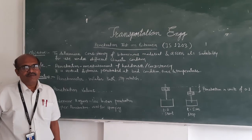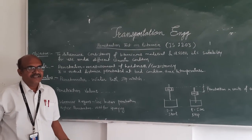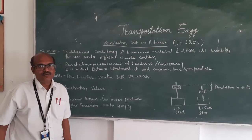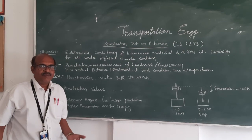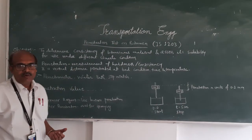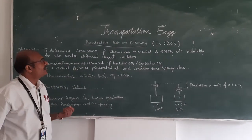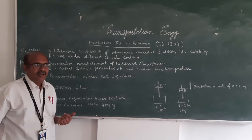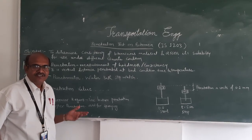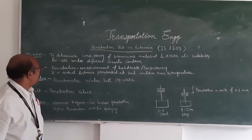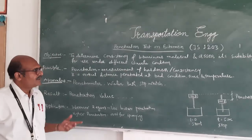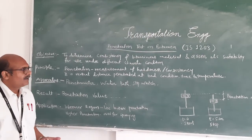We have to find out whether this bitumen is suitable for each and every climatic condition. Depending on the climatic condition, we have to choose the proper grade of bitumen. The grade of bitumen is also determined from the penetration value. Nowadays we are not checking penetration grade bitumen; we are using the new grade, which is the viscosity grade. So the grading has changed from penetration grade to viscosity grade. The principle is that the penetration value measures the hardness or consistency of the bitumen.